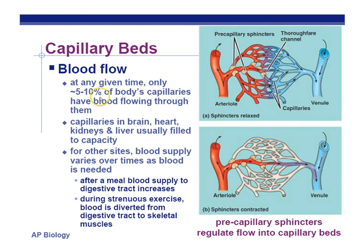At any given time, only about 5–10% of the body's capillaries have blood flowing through them. Capillaries in the brain, heart, and kidneys usually fill to capacity; in other sites, blood supply varies as needed. Little sphincters — small muscle areas — act as valves to open or close capillary beds. When you overheat, more capillary beds open to dissipate heat via more surface area, causing flushing. When freezing, capillary beds in the extremities close to conserve heat for the core, which can make you look pale.